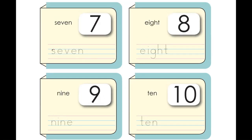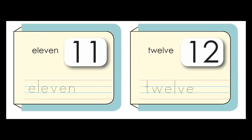Seven — how do we spell seven? S-E-V-E-N, seven. Eight — how do we spell eight? E-I-G-H-T, eight. Very good. Nine — how do we spell nine? N-I-N-E, nine. And ten — how do we spell ten? T-E-N, ten. Now the last ones: eleven and twelve. This is a new word you are going to learn this year.